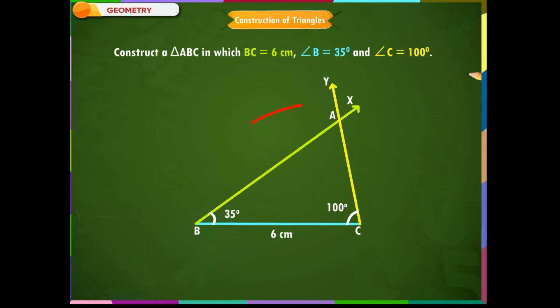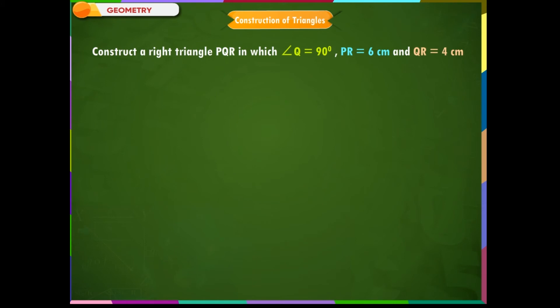Right angle triangle is a very important type of triangle in geometry. A triangle is said to be a right triangle if one of its three angles is a right angle, that is 90 degrees.